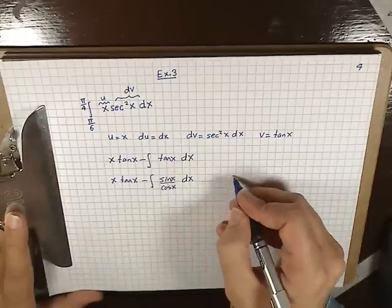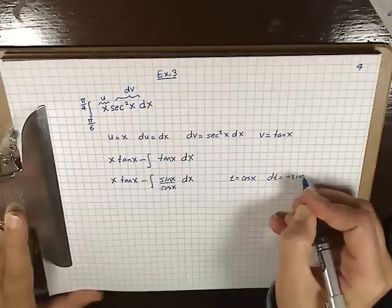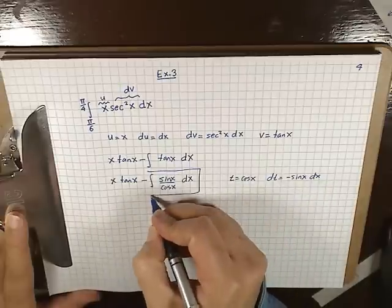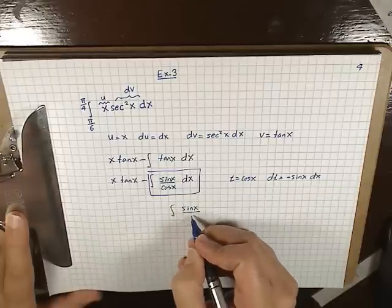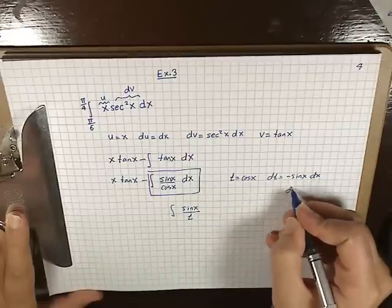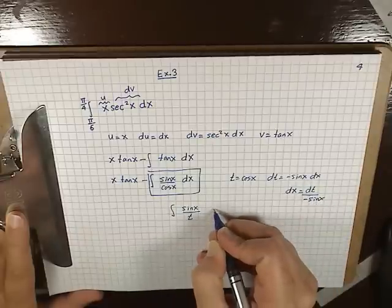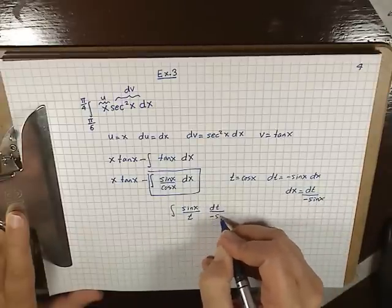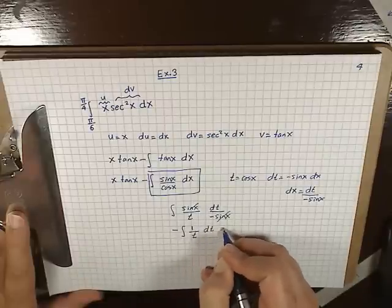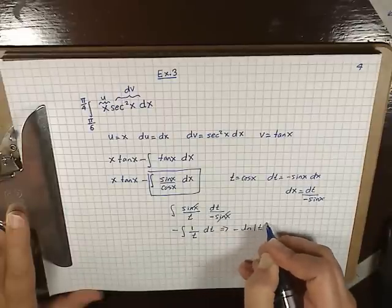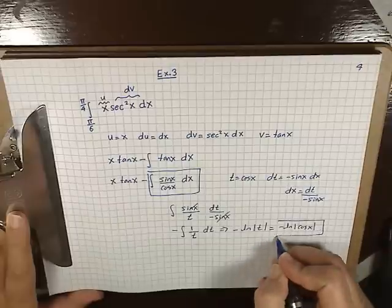Now we use substitution: let t equal cos x, so dt equals minus sin x dx. The integral of sin x over cos x becomes the integral of 1/t, and solving for dx gives dx equals dt over negative sin x. The sin x cancels out, giving minus the integral of 1/t dt, which equals minus ln|t|. Since t equals cos x, we get minus ln|cos x|. That's the result of this integral.